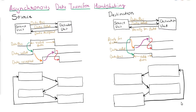Hello students. In the previous video we discussed asynchronous data transfer using strobe, and the limitation was that we didn't have any acknowledgement mechanism to figure out whether the data is properly received by the receiver or not. To overcome this problem, we will go with handshaking.